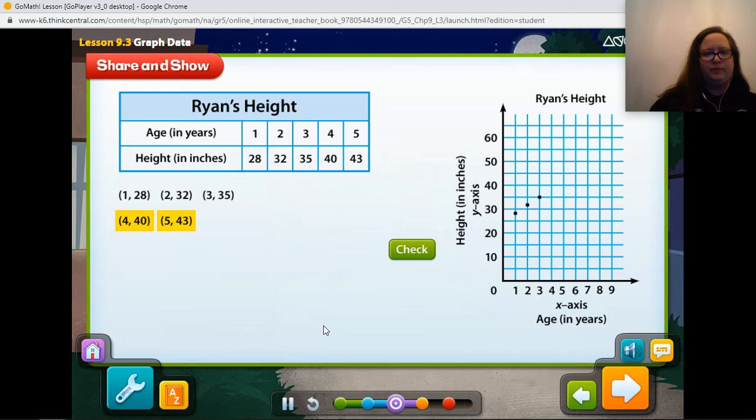Now, plot the two remaining ordered pairs on the coordinate grid. Select the correct locations for the last two ordered pairs. So if we have 4, 40, we're going to go over 4, and we're going to go up 40, and we're going to go over 5, and up to 43. That's right! These are the correct point locations.